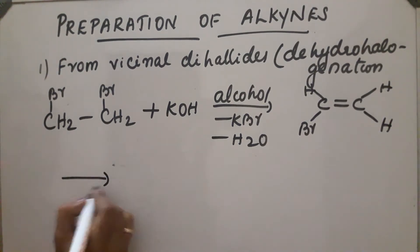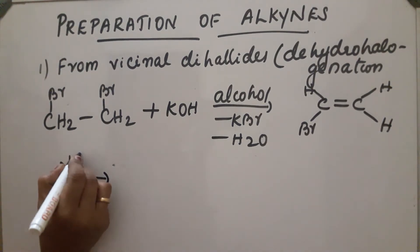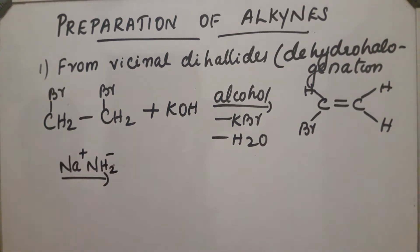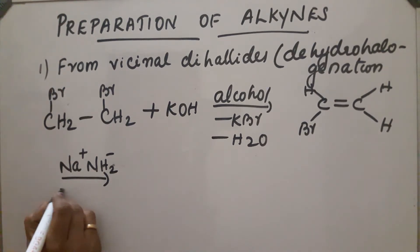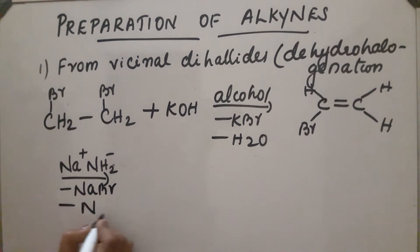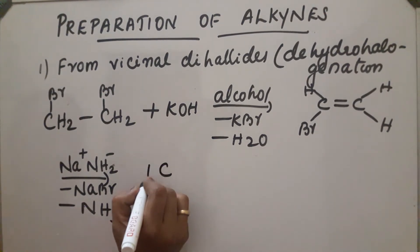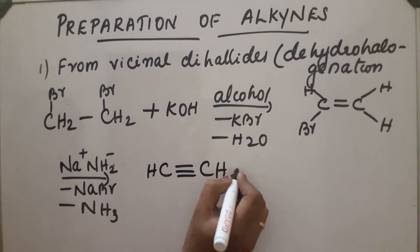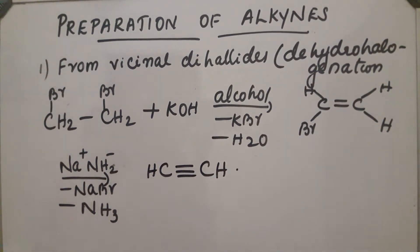Next step: the alkene on reaction with sodamide (NaNH2). In this step also, one HBr is removed — NaBr and NH3 are released. One H and one Br are removed, and the compound obtained is an alkyne.